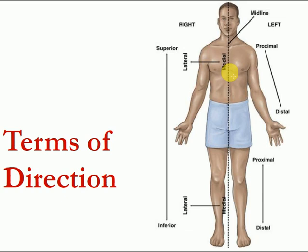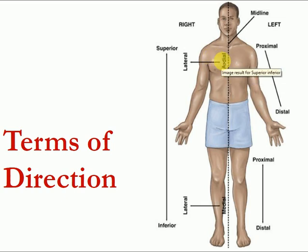From the midline, structures can be medial or lateral. Medial means closer to the midline or sagittal plane of the body. Lateral structures are far from the midline. For example, considering the heart and lungs: the heart's position is closer to the midline compared to the lungs, so the lungs are lateral to the heart. In medial and lateral terms, the sagittal plane is the axis of reference.